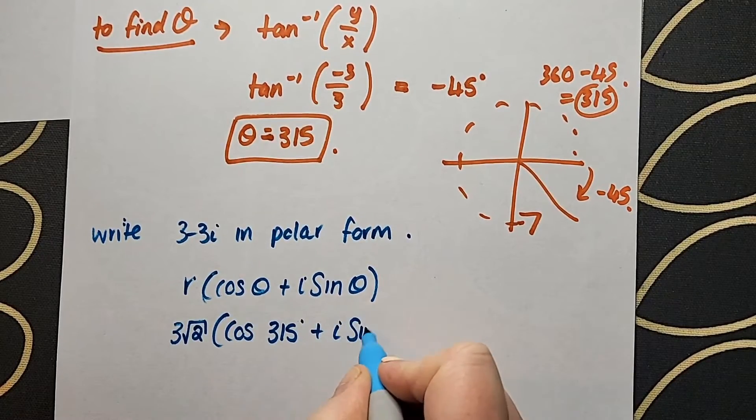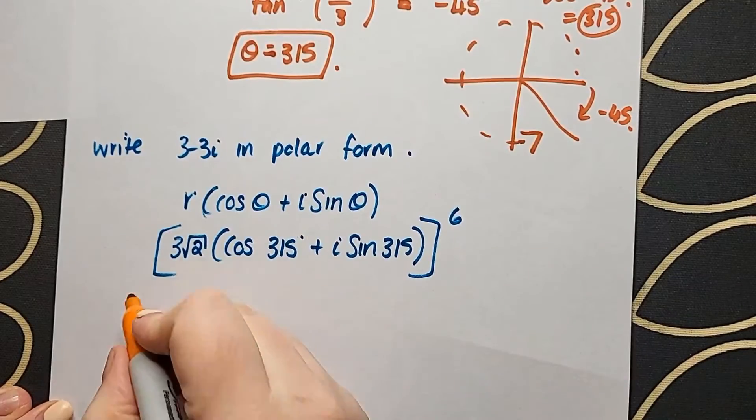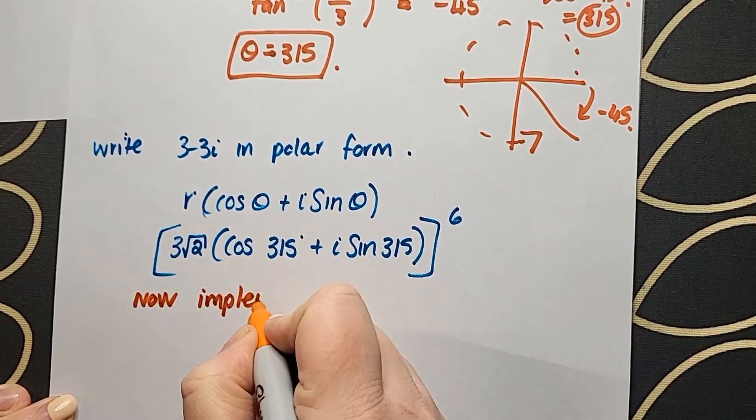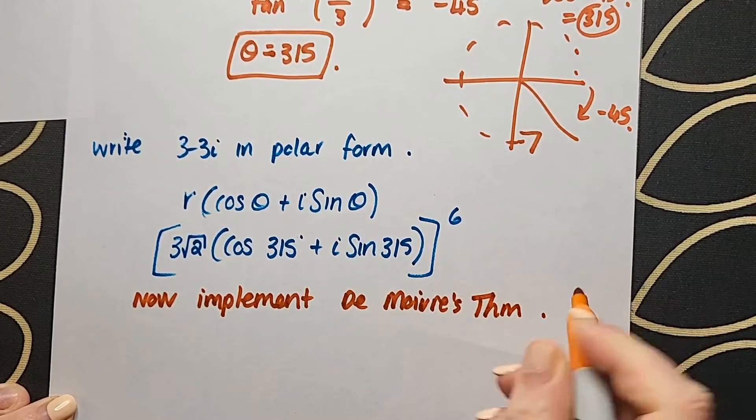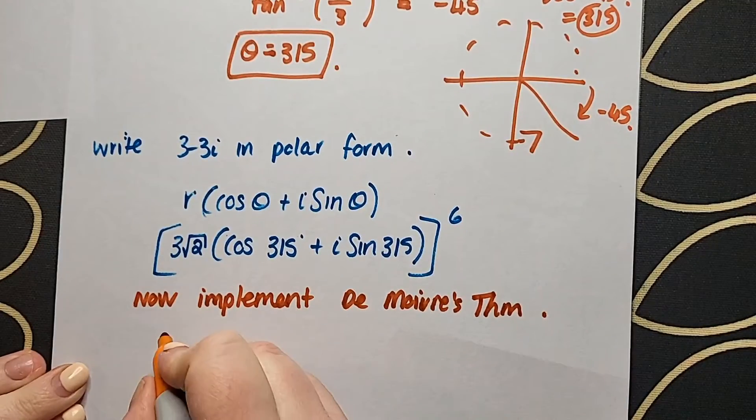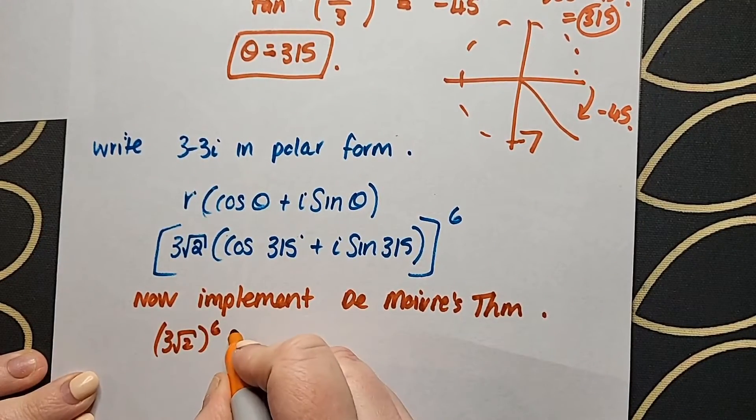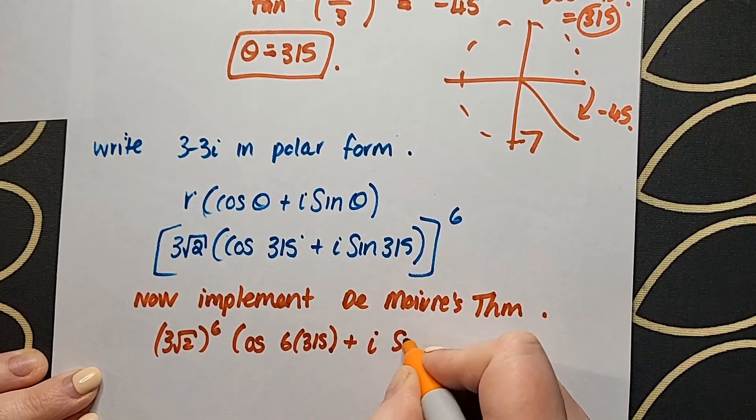Once we have all those things done correctly, it is now time to implement De Moivre's theorem to deal with that power of 6. You've noticed that I left the power of 6 out until now because it wasn't really relevant. I now pop it in and just follow the rule which tells me to put the power of 6 on my r value and multiply that power of 6 into both of my theta values.